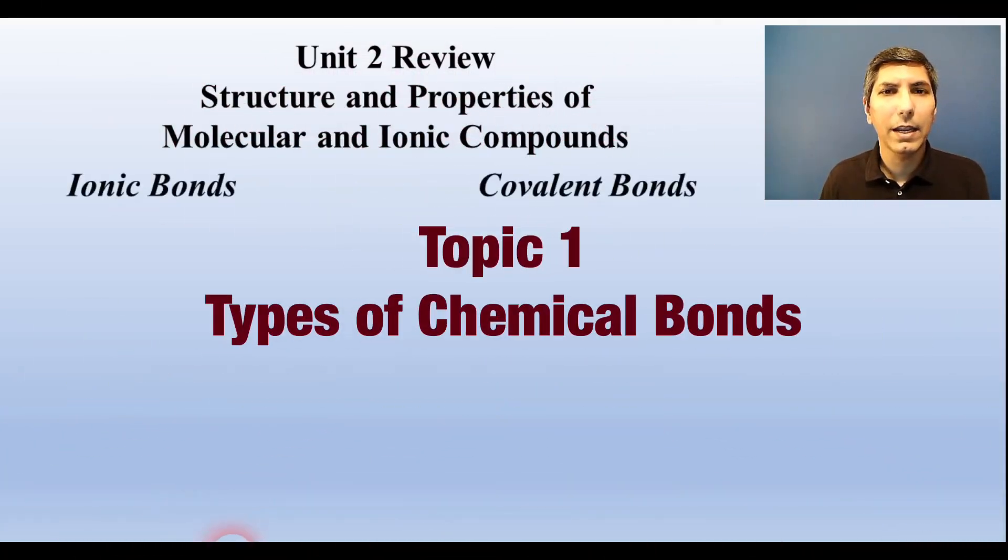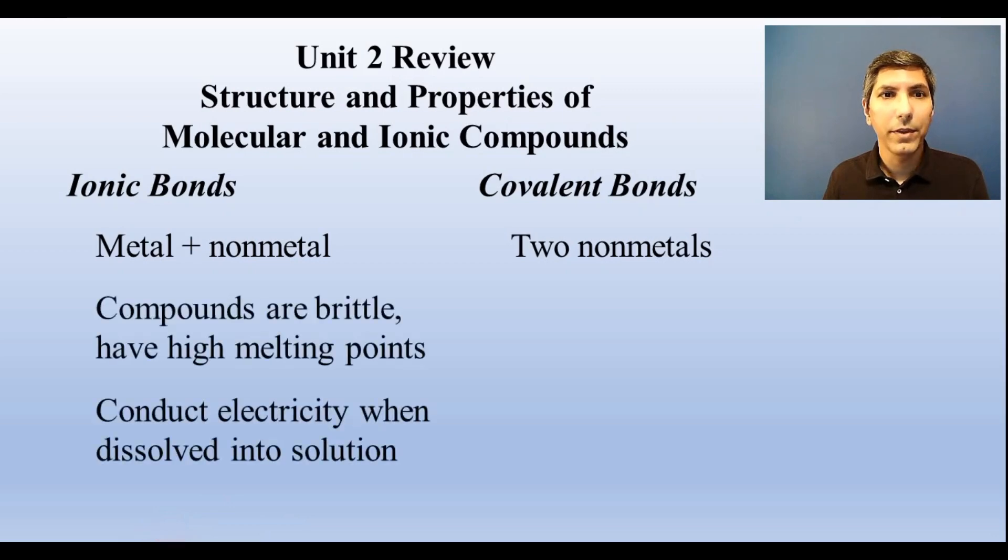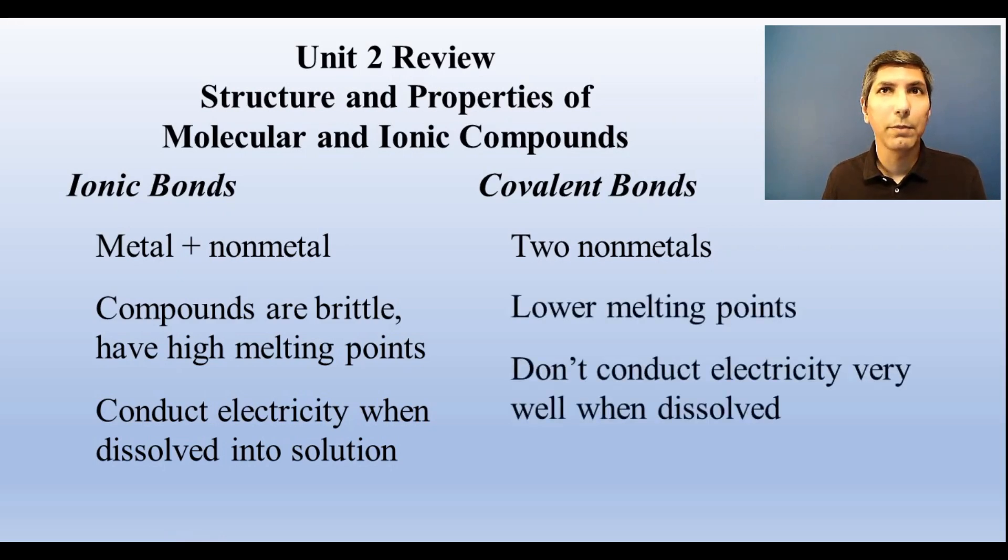We normally say ionic bonds are between a metal and a non-metal, while covalent bonds are between two non-metals. Usually ionic compounds are brittle, they have high melting points, and conduct electricity when dissolved into solution. On the other hand, covalent compounds have lower melting points and don't conduct electricity very well when dissolved.